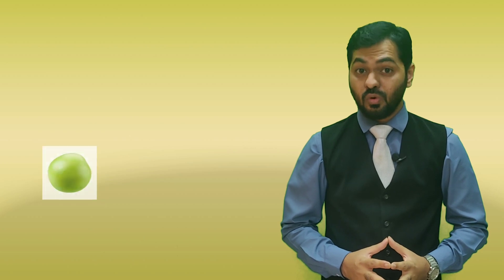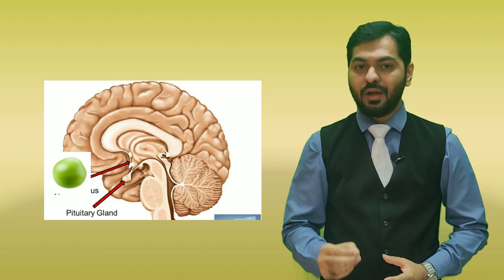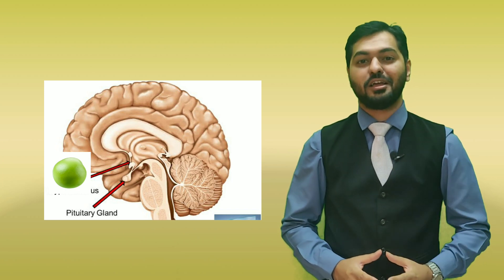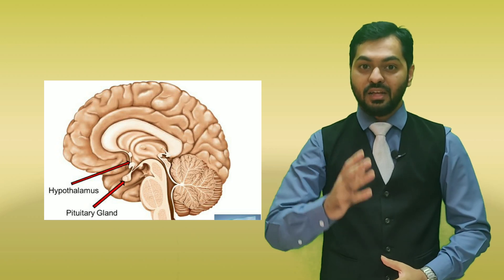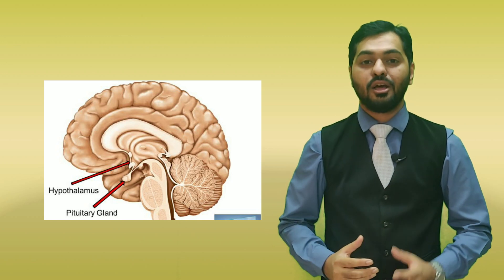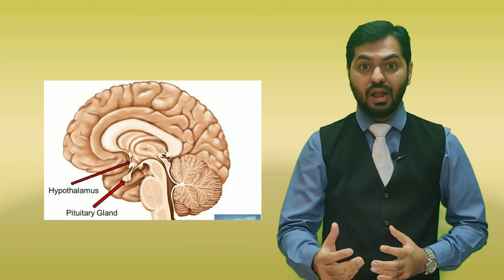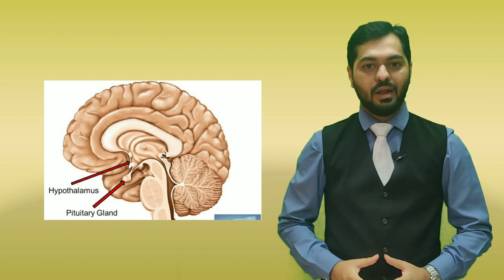The pituitary gland, when you observe the size, it is the size of a pea — a pea-sized gland weighing just 0.5 to 0.6 grams. But size matters. What matters is the role that it performs, and it is considered as the master gland because all our body structures and all other endocrine glands are actually being controlled by the pituitary gland.